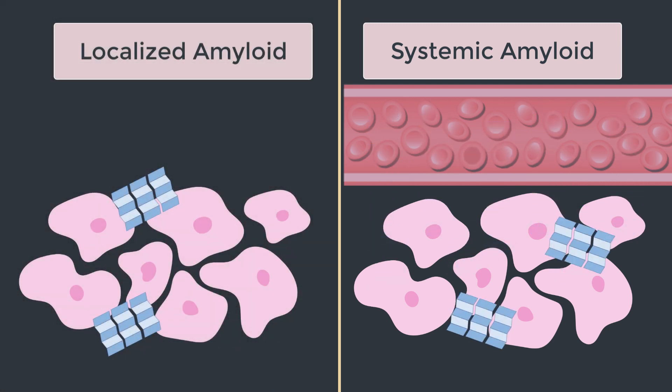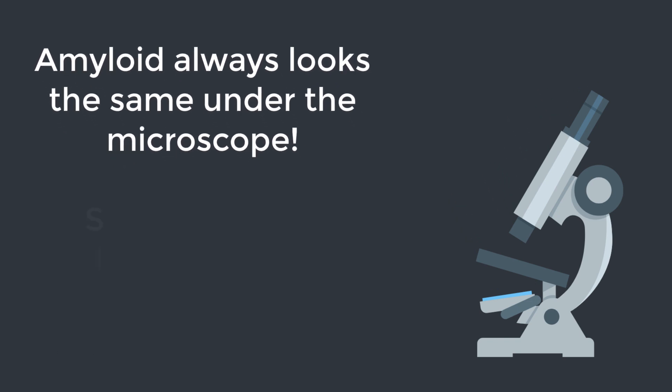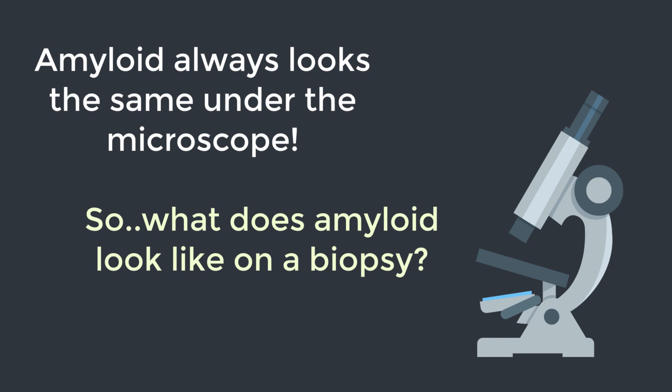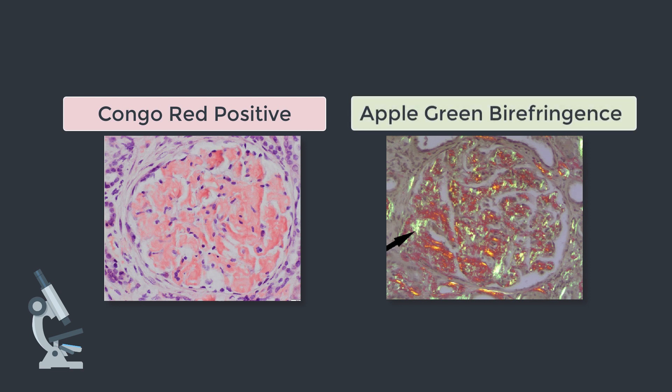So amyloid can be localized or systemic, but regardless of the tissue affected or the type of amyloid, amyloid always looks the same under the microscope. No matter what type of amyloid we're dealing with, no matter the protein that created it, if we take a biopsy of any tissue containing amyloid it always looks the exact same under the microscope, because amyloid is amyloid. So now I have a question for you: what does amyloid look like on a biopsy? I'll give you a clue — there are two biopsy buzzwords that go along with amyloid. Pause if you need to, commit to your answer, and then hit play.